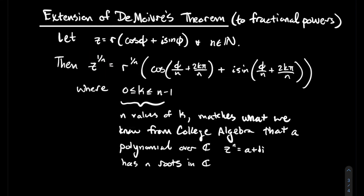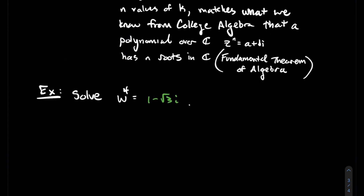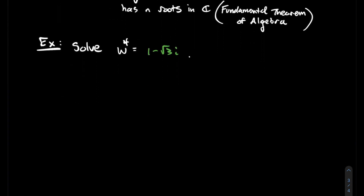Why should that make sense? If you think about college algebra — I know that any polynomial over the complex numbers, and in particular this polynomial z to the n equals a plus bi, thinking of z as a variable — a polynomial of degree n has to have exactly n complex roots. And so that's exactly what we're saying here. Let's do an example where we use this extension of De Moivre's theorem to talk about fractional powers of complex numbers.